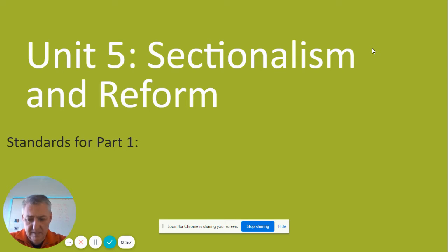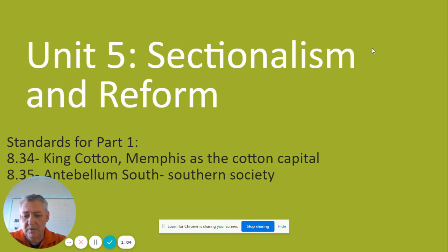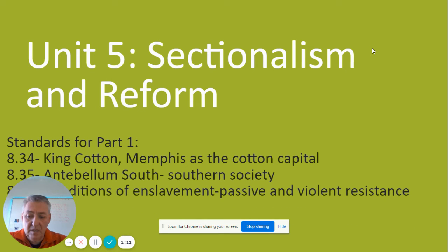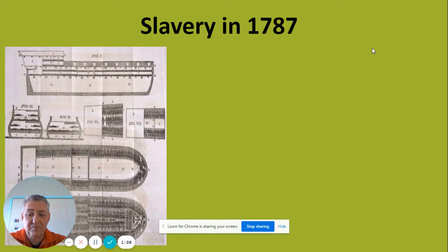For part one, we'll cover different topics. Standard 8.34 is called King Cotton, and Memphis is the cotton capital. 8.35 covers the Antebellum South, talking about southern society at this time. 8.36 covers conditions of enslavement and how enslaved people resisted — they resisted two ways: passively and not so passively. Finally, we'll cover the American Industrial Revolution, including the inventors and inventions you need to know.